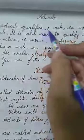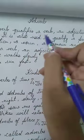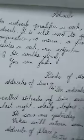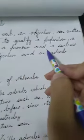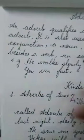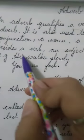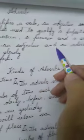An adverb qualifies a verb — you know what is verb, action words — an adjective, or another adverb. It's also used to qualify a preposition, conjunction, a noun, a pronoun, and a sentence, besides a verb, an adjective, and an adverb.